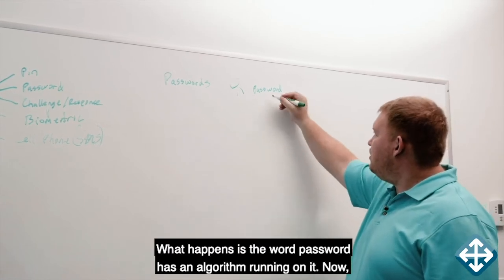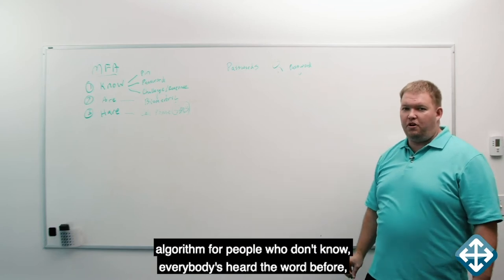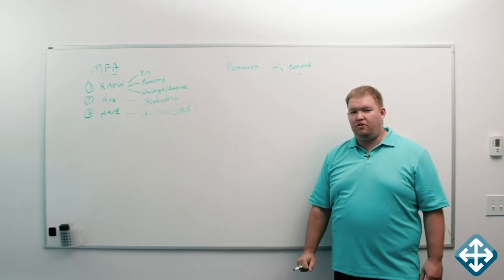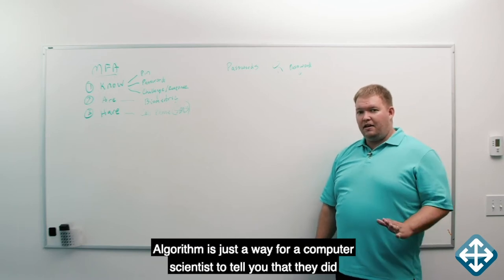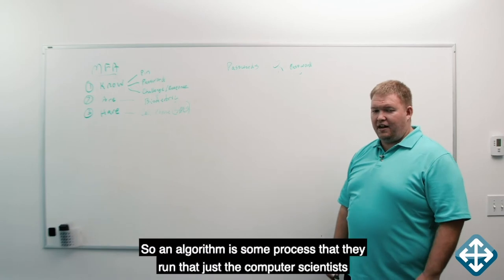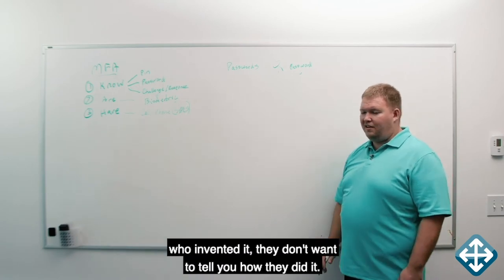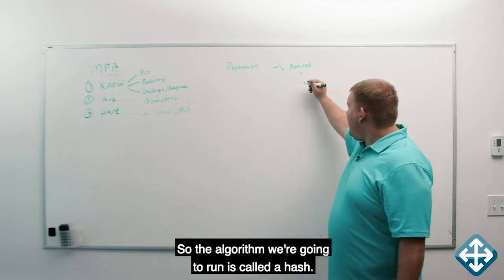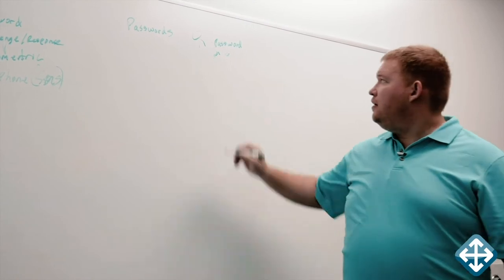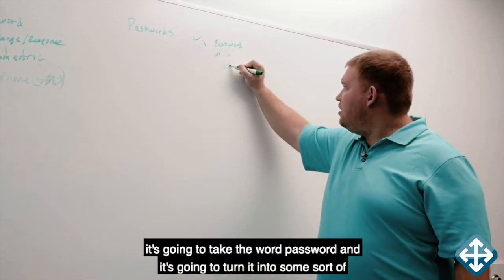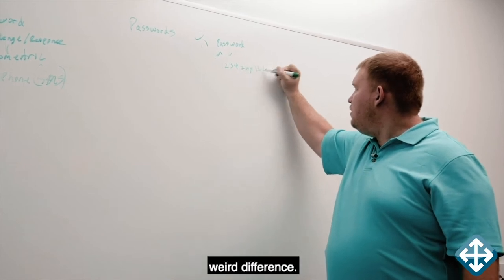What happens is the word password has an algorithm running on it. Algorithm, for people who don't know, everybody's heard the word before, nobody knows what it means. Algorithm is just a way for a computer scientist to tell you that they did something and they don't want to explain how they did it. So an algorithm is some process that they run that just the computer scientists who invented it, they don't want to tell you how they did it. So the algorithm we're going to run is called a hash. That's if we're doing it correctly. It's going to take the word password and it's going to turn it into some sort of weird difference.